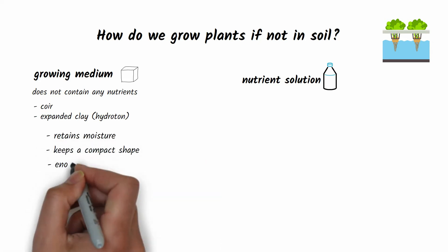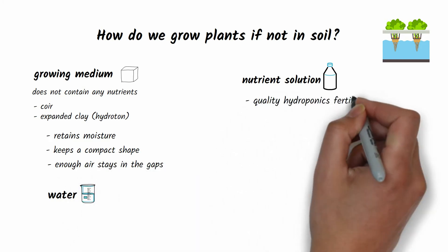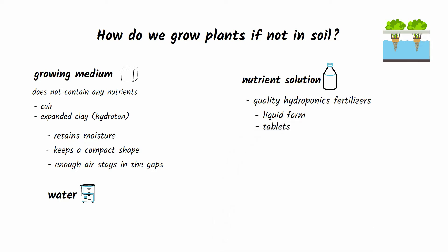As a result, enough air stays in the gaps which benefits the development of the plant's root system. The nutrient solution can be used either in liquid form or as a tablet.